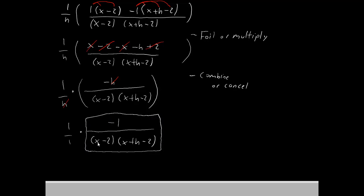Our final answer is simply this fraction that I'm boxing in. Negative 1 over x minus 2 times x plus h minus 2. And that is our difference quotient. So that can get kind of messy. As long as you're careful with your fractions, and you're good about combining your like terms and canceling out everything that you can, usually this will work out pretty well.